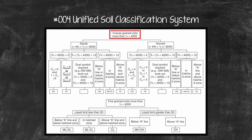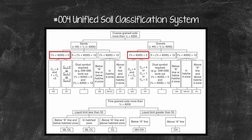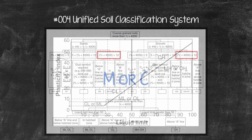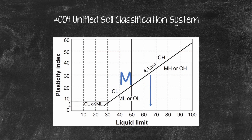The second letter for a coarse-grained soil is W, P, M, or C. If the soil has less than 5% passing No. 200, it is clean and the second letter will be W or P, depending on the coefficient of uniformity (Cu) and coefficient of curvature (Cc) obtained from the particle size distribution curve. If the coarse-grained soil has more than 12% passing No. 200, it is dirty and the second letter will be M or C, depending on the Atterberg limits of the portion smaller than 0.425 mm. M is selected if the soil plots below the A-line on the plasticity chart, and C if it plots above.